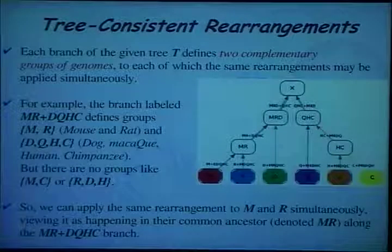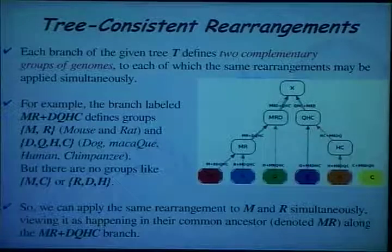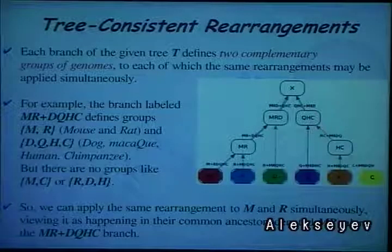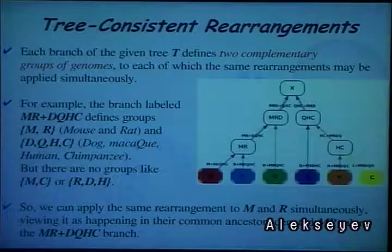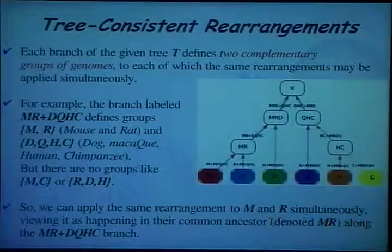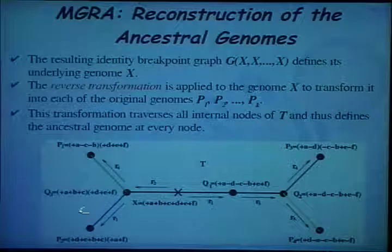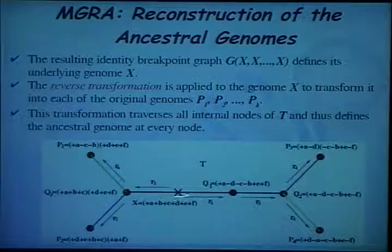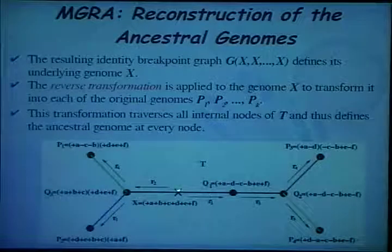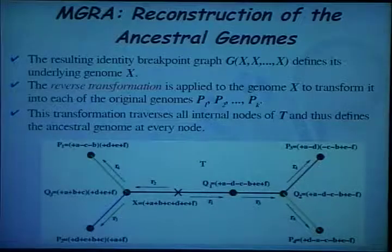The question is to which groups of genomes we can apply rearrangements simultaneously. This is dictated by the tree. For example, we can apply two-breaks to mouse and rat together, but not to mouse and human together, because mouse and human together have no interpretation in the given phylogenetic tree. When all genomes converge to a single genome X, the reverse transformation makes X traverse the whole tree and defines genomes at the internal nodes.